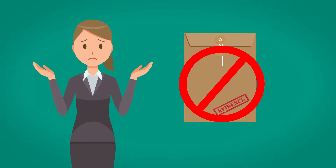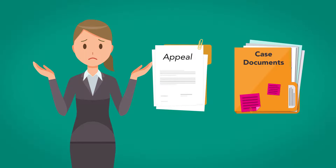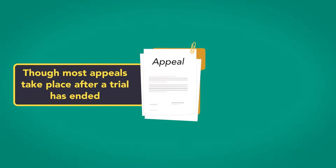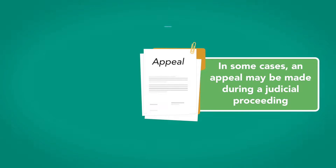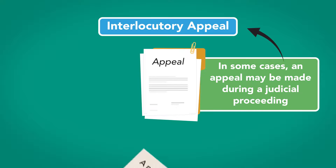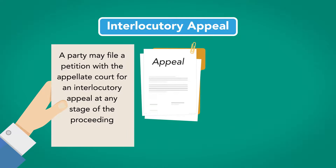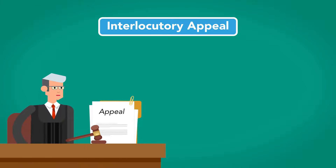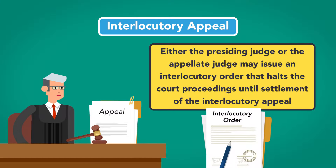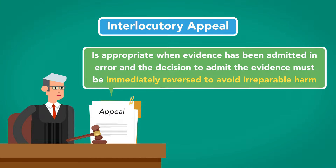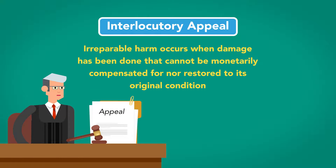If a party believes that evidence was improperly admitted, she may file an appeal, assuming the appellant's attorney preserved the claim of error with a timely objection. Though most appeals take place after the trial has ended, in some cases an appeal may be made during a judicial proceeding, which is called an interlocutory appeal. A party may file a petition with the appellate court for an interlocutory appeal at any stage of the proceeding, and either the presiding judge or the appellate judge may issue an interlocutory order that halts the court proceedings. An interlocutory appeal is appropriate when evidence has been admitted in error and the decision to admit it must be immediately reversed to avoid irreparable harm — that is, damage that cannot monetarily be compensated nor can the original condition be restored.